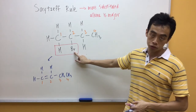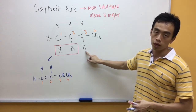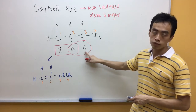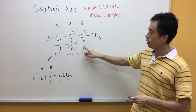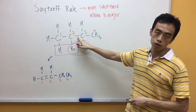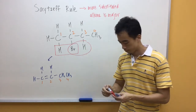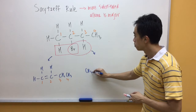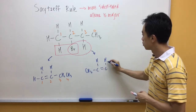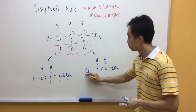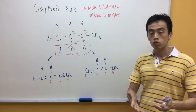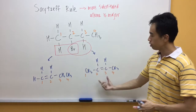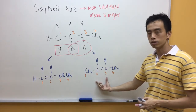Now, Br has another neighbouring hydrogen, which is attached to carbon three. So, if we remove this HBr, then the double bond formed will be between carbon two and three. So, when we form a double bond between carbons two and three, the product alkene will look something like this.